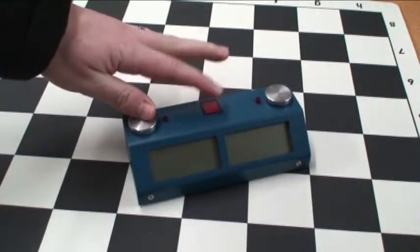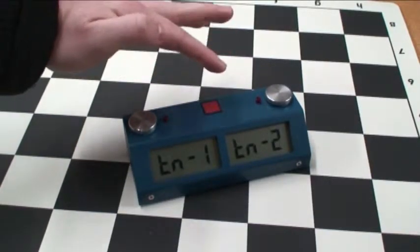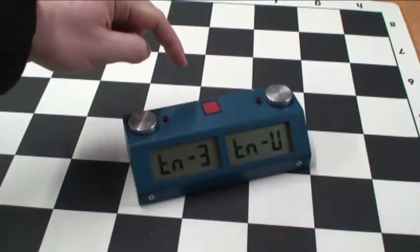Again, turning on with the left side of the clock gives you the first four tournament modes. That's one time control, two time controls, three time controls, and unlimited time controls.